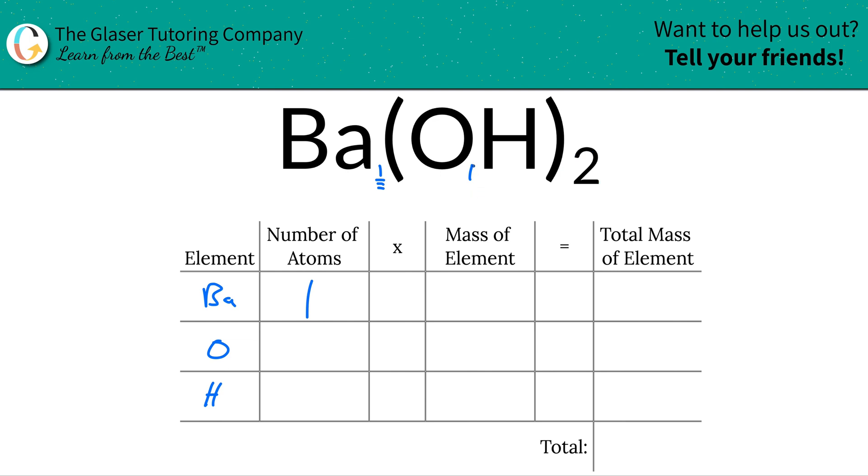In other words, all you'd have to do is take this subscript and multiply it by that subscript to find the total number of oxygen. So that would be two. And the same thing for hydrogen. The subscript there is one, but since it's part of hydroxide, we've got to multiply it by the two outside, so that would be two hydrogens in total.